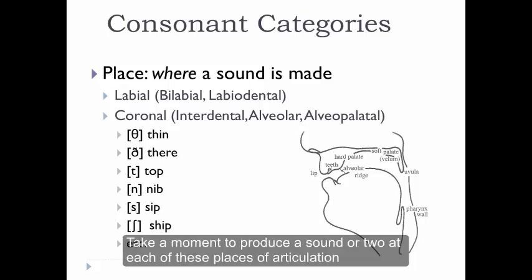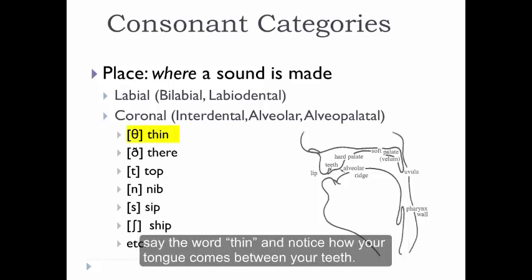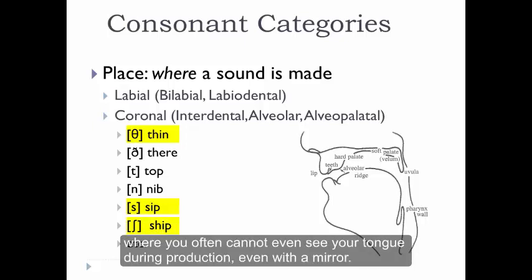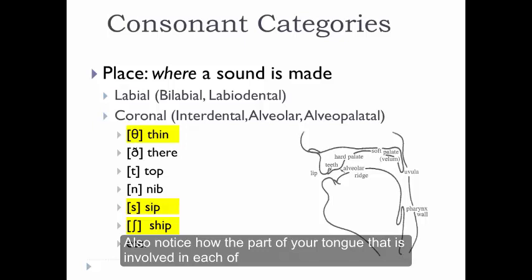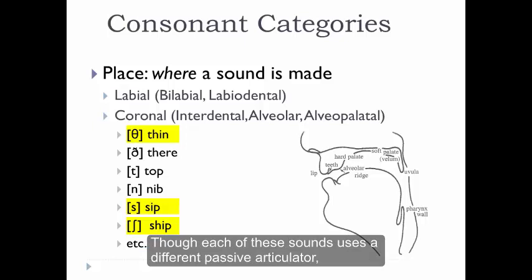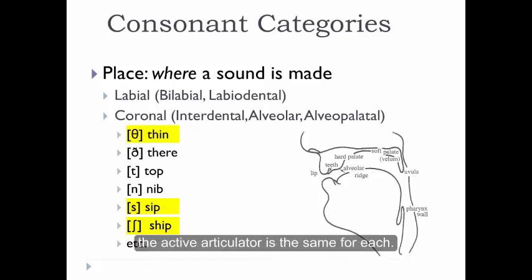Take a moment to produce a sound or two at each of these places of articulation. Say the word thin and notice how your tongue comes between your teeth. Contrast this with the first sound in sip, where your tongue stays behind your front teeth, and with the first sound in ship, where you often can't even see your tongue during production, even with a mirror. Also notice how the part of your tongue involved in each of these types of sounds is likely the same — though each uses a different passive articulator, the active articulator is the same for each.